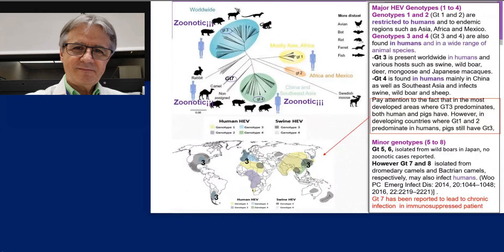However, in developing countries where genotype one and two predominate in humans, pigs still have genotype three — suggesting that transmission in humans is human-to-human by waterborne route, by contaminated water, by fecal residuals due to poor sanitation conditions. In relation to the minor genotypes five to eight: genotype five and six are isolated just from wild boar in Japan, so there are no zoonotic cases reported. However, genotype seven and eight have been isolated from dromedary camels and Bactrian camels respectively, and may also infect humans as evidenced by some cases of consuming milk or meat from these animals. Genotype seven has been reported to cause chronic infection in one immunosuppressed case.